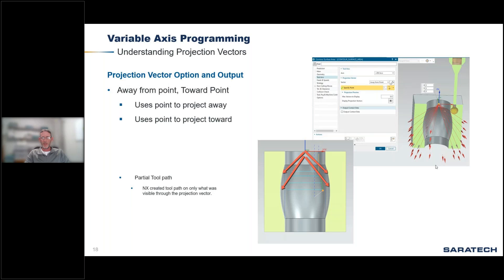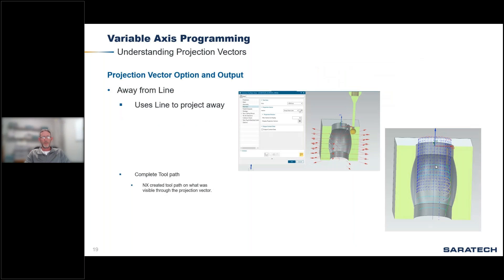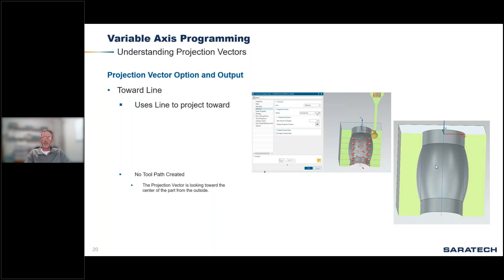For away from point: it's projecting away from the point and three-quarters of the surface is able to be mapped, resulting in the upper toolpath. The reason it's not giving the lower toolpath is the shank of the tool is rubbing the sidewall of the upper circle. Away from line gives similar results because you're projecting in a cylindrical circle away from that line and it can see the entire surface. Toward line — coming from outside the part going in — NX can't see the surface, so no toolpath resulted.